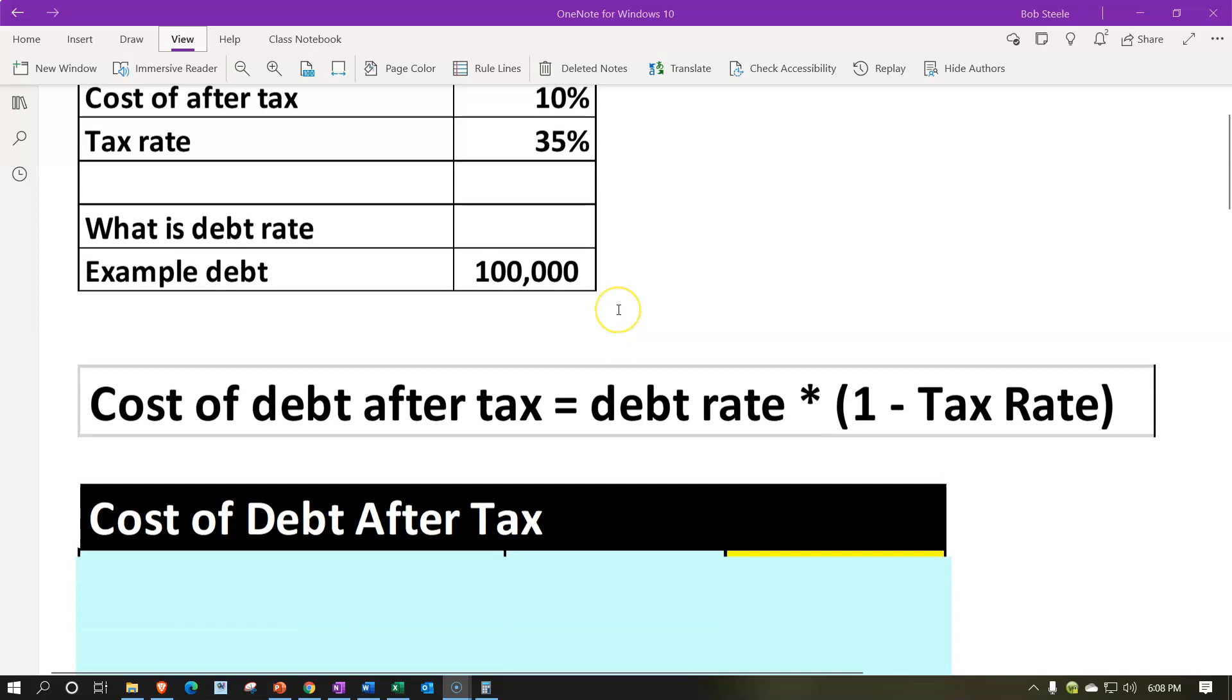Now, in a prior presentation, we did this the standard way. And the formula that you want to have in your mind is the cost of debt after taxes equals the debt rate, normally like the interest rate, the rent on the money, the cost of the debt, the cost of borrowing, the cost of having the use of the money, kind of like rent, but interest typically, times one minus the tax rate. That's going to be our formula.